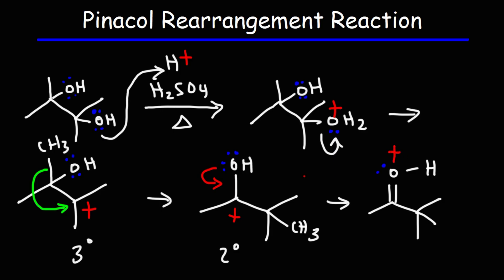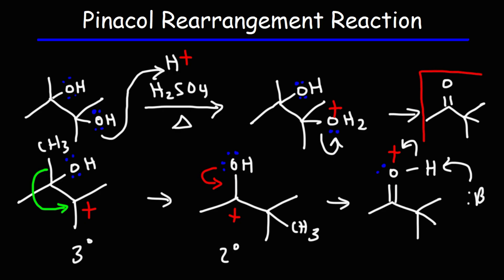In the next step, we could use a base to remove this hydrogen, giving us our final product, which is the ketone. This particular ketone has the name pinacolone. So that's the pinacol rearrangement reaction — it converts 1,2-diols into a ketone by means of an acid catalyst.